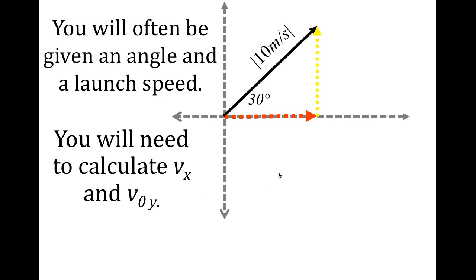Knowing that we can split this up into a triangle — our velocity is 10 meters per second, the angle is 30 degrees — we can break that up into an x component and a y component, like when we did the save-by-the-bell activity splitting up the legs of our trip. Go ahead and calculate the x velocity and the y velocity using your calculator and SOH-CAH-TOA. Pause the video and do that now.